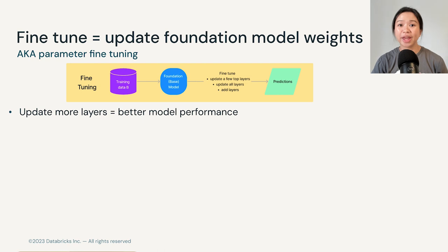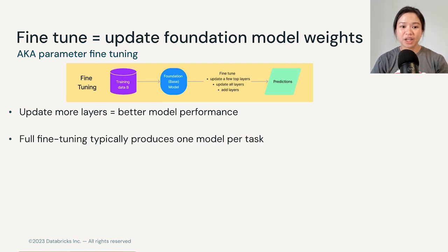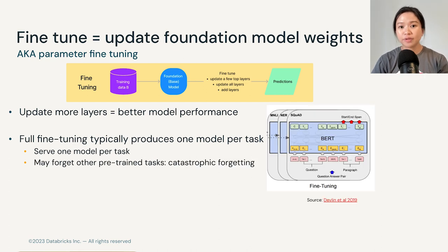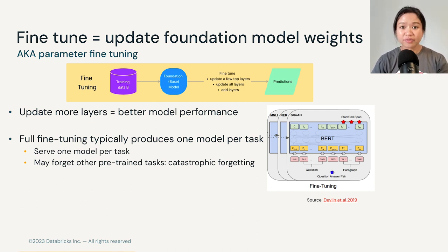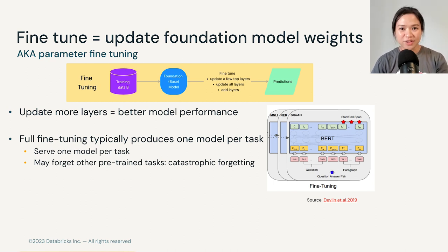Usually, when we update more layers, we get better model performance. And typically, when we do full fine-tuning — which means updating all the model weights — we produce one model per task. On the right image, you can see that we can fine-tune BERT on different datasets: SQuAD, which is a Q&A dataset; a named entity recognition dataset; and a multi-genre natural language inference dataset. Each of these fine-tuning processes gives us a new model, so we serve one model per task at deployment time. But this means we need to deal with many copies of the same foundation model, which is especially undesirable when our models are much bigger than this 110 million parameter BERT model.